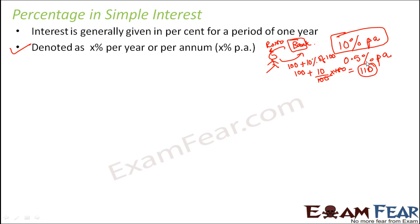In case you do not return it in one year, for each additional year you also pay 10% of 100. So instead of 110, you might pay 120 if returning after two years, and 130 if returning after three years, and so on. If you take a longer duration to return the money to the bank, you end up paying more interest. This is the concept of simple interest.